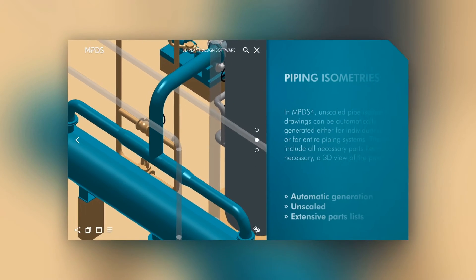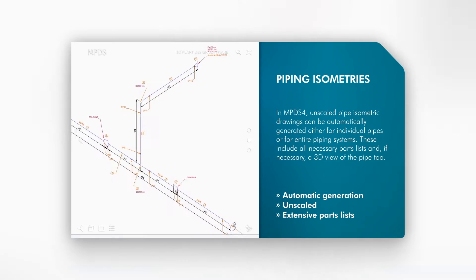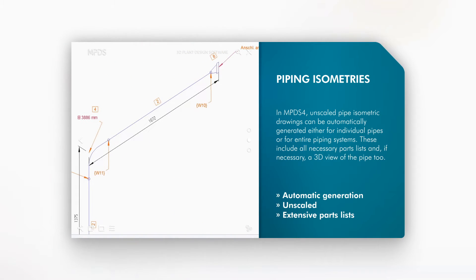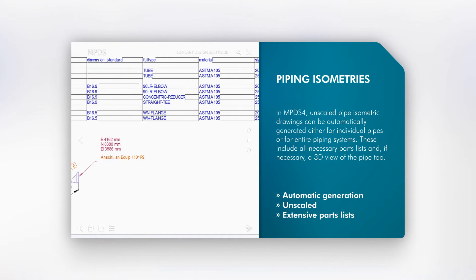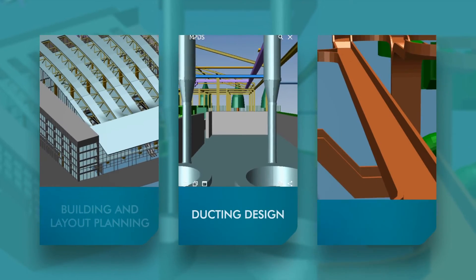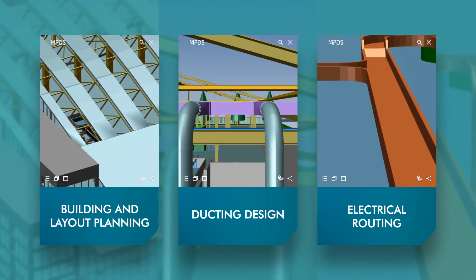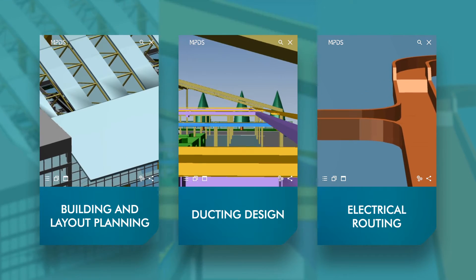MPDS-4 automatically generates a piping isometric for a single pipeline or for the complete design. This includes the parts list and, if necessary, a 3D view of the pipeline. Additional modules are available for factory layout, ducting, and electrical for comprehensive plant design.